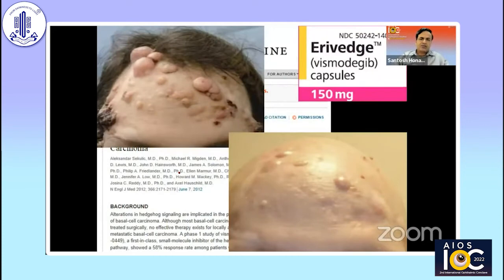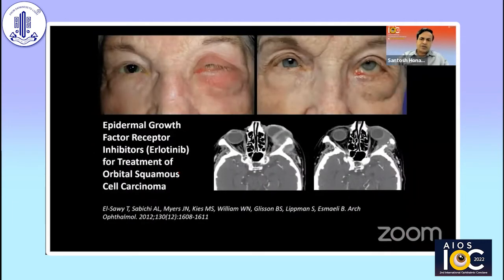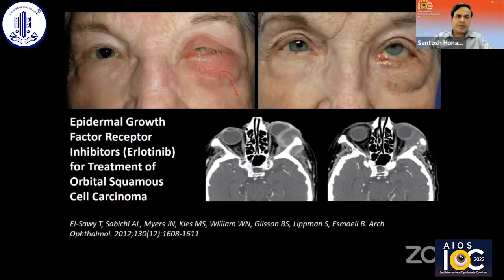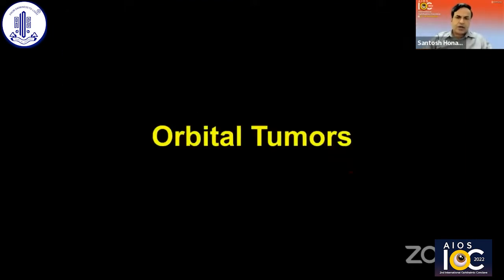For basal cell carcinoma especially, we have target therapy in the form of vismodegib and sonidegib — this is for the syndromic variant of basal cell carcinoma, and the same treatment can now be used for orbital extension as well. For squamous cell carcinoma where the patient may be inoperable because of systemic reasons, the patient can now be stabilized and controlled symptomatically using epidermal growth factor receptor inhibitors such as erlotinib.